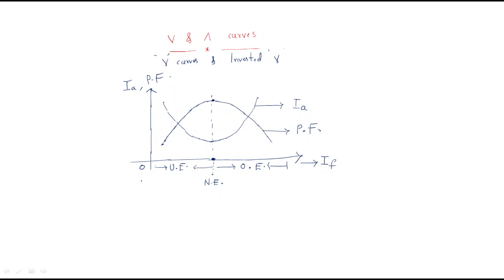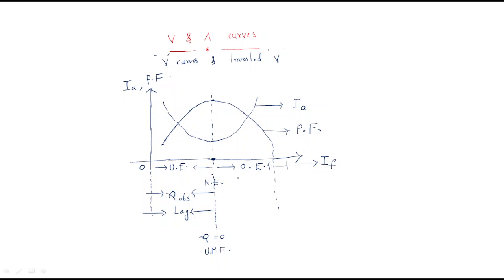At this point we can define additional parameters. In under excitation condition, the synchronous motor absorbs reactive power and operates at lagging power factor. At normal excitation, reactive power is zero — no absorption and no delivery — and it acts at unity power factor. In over excitation condition, reactive power is delivered and the motor acts at leading power factor.